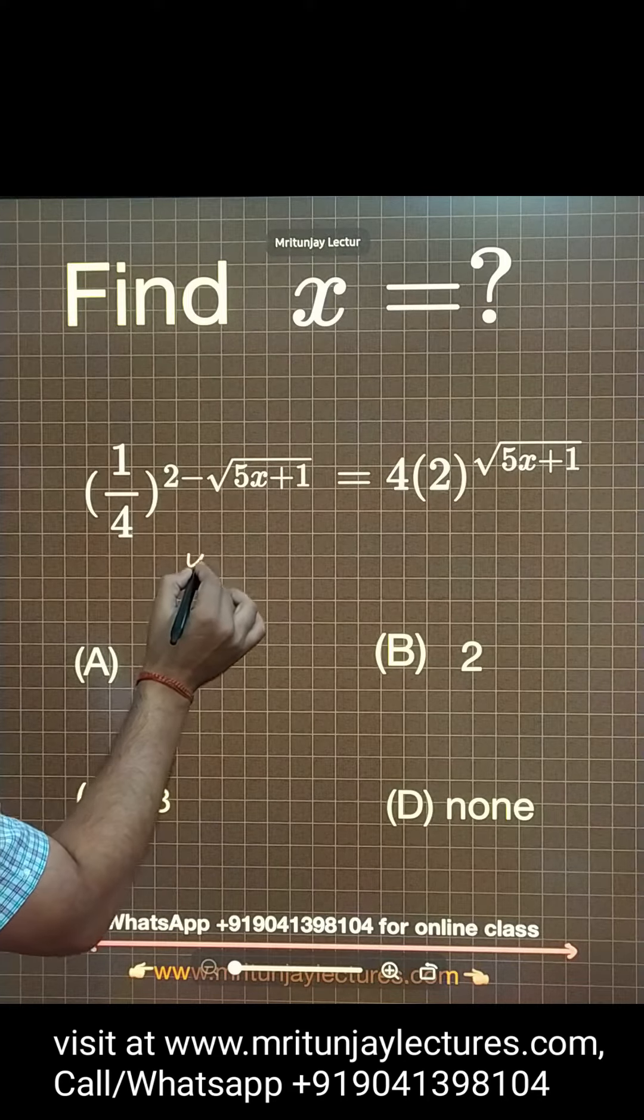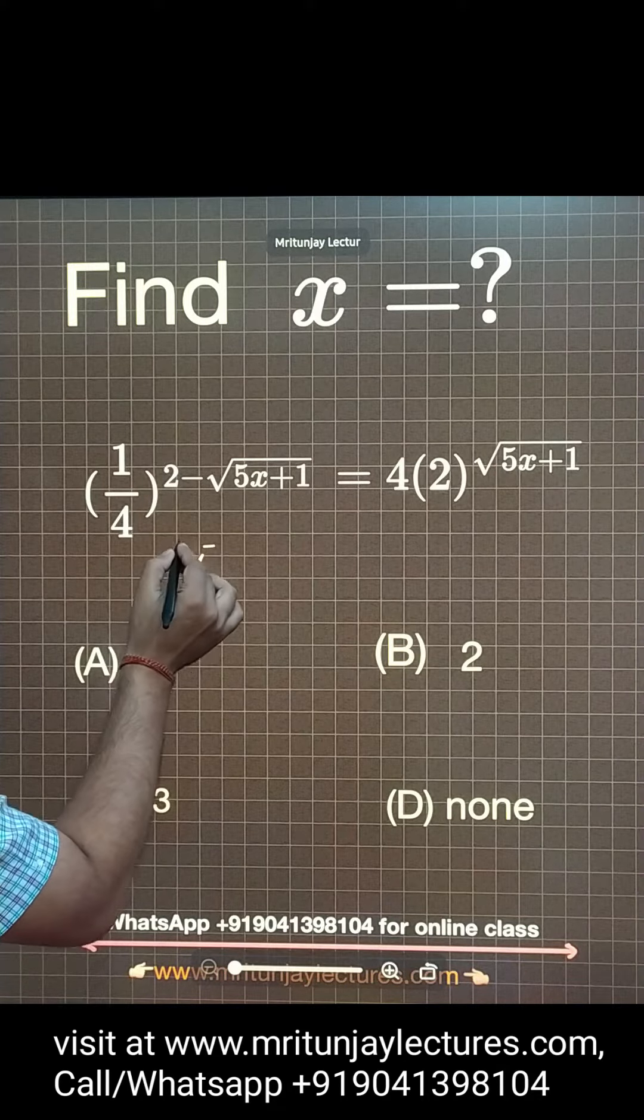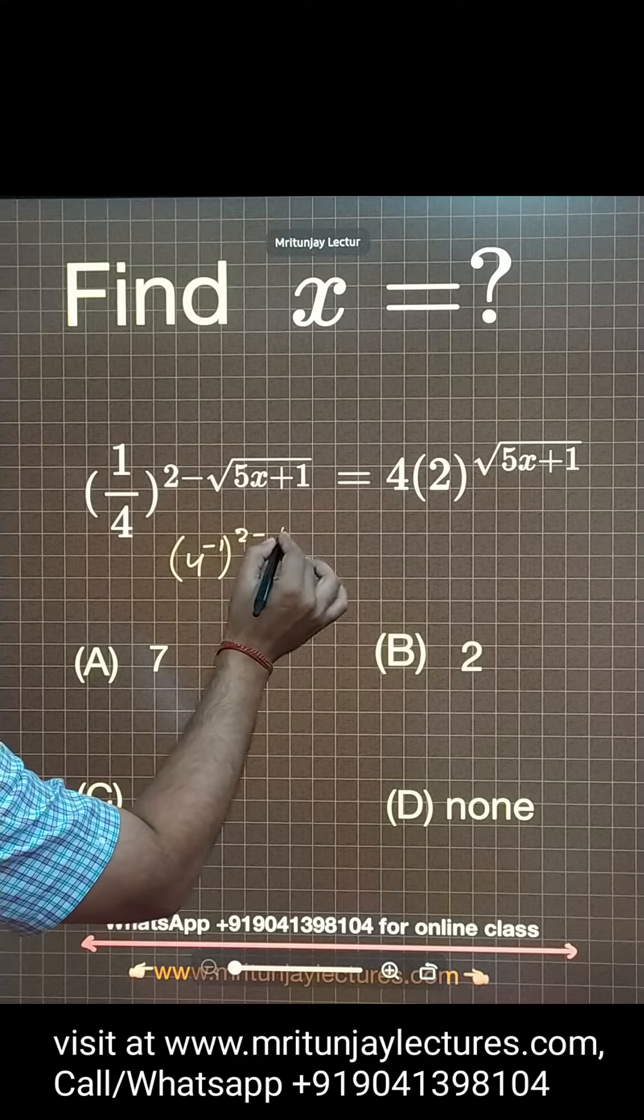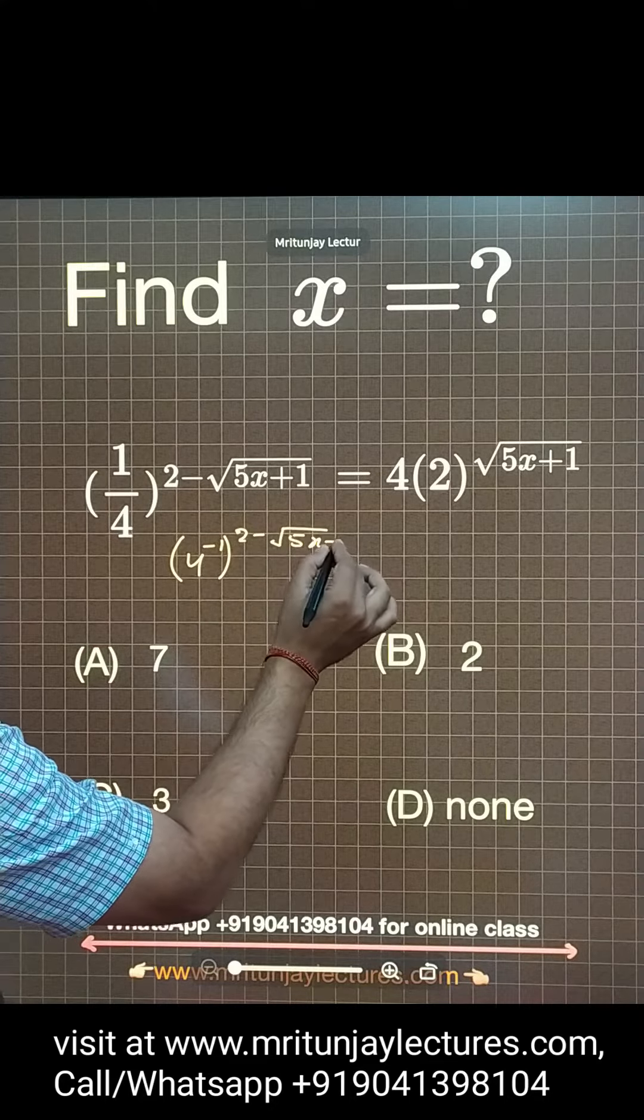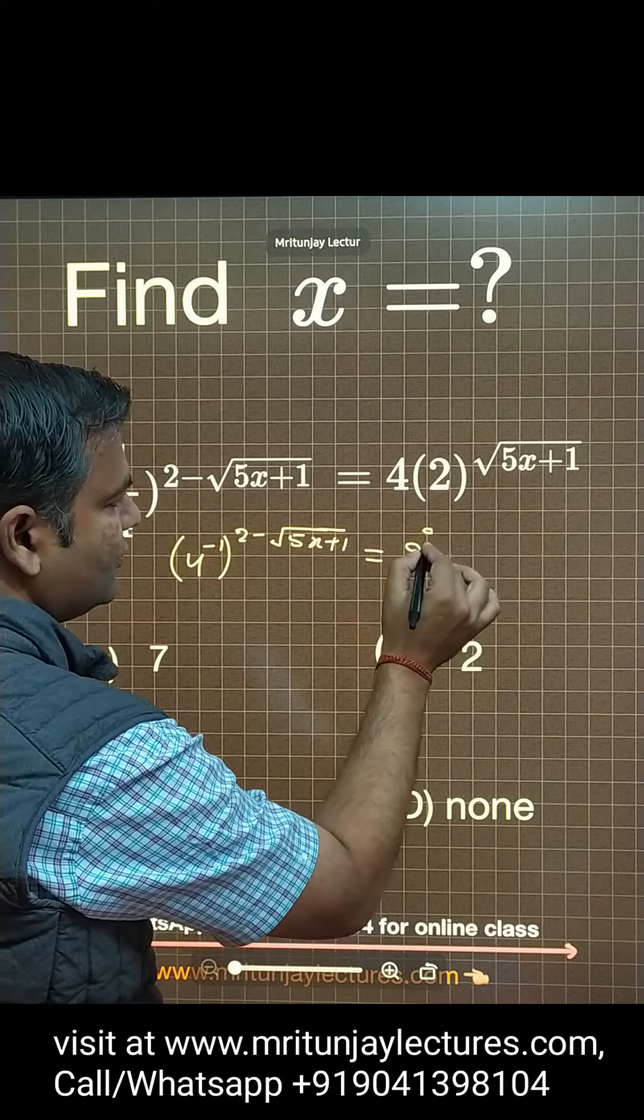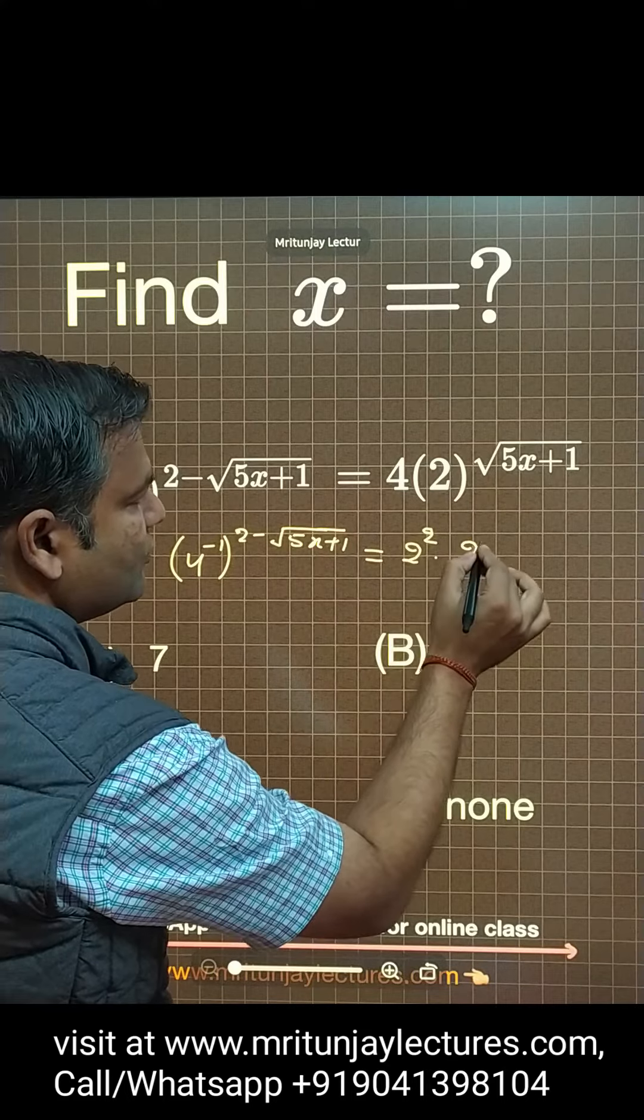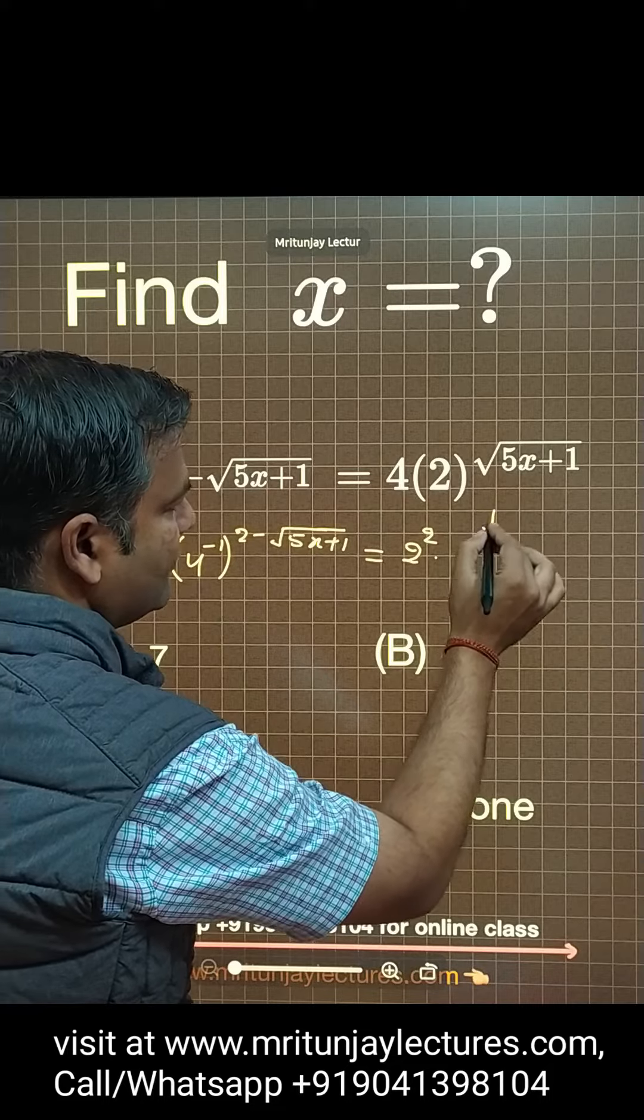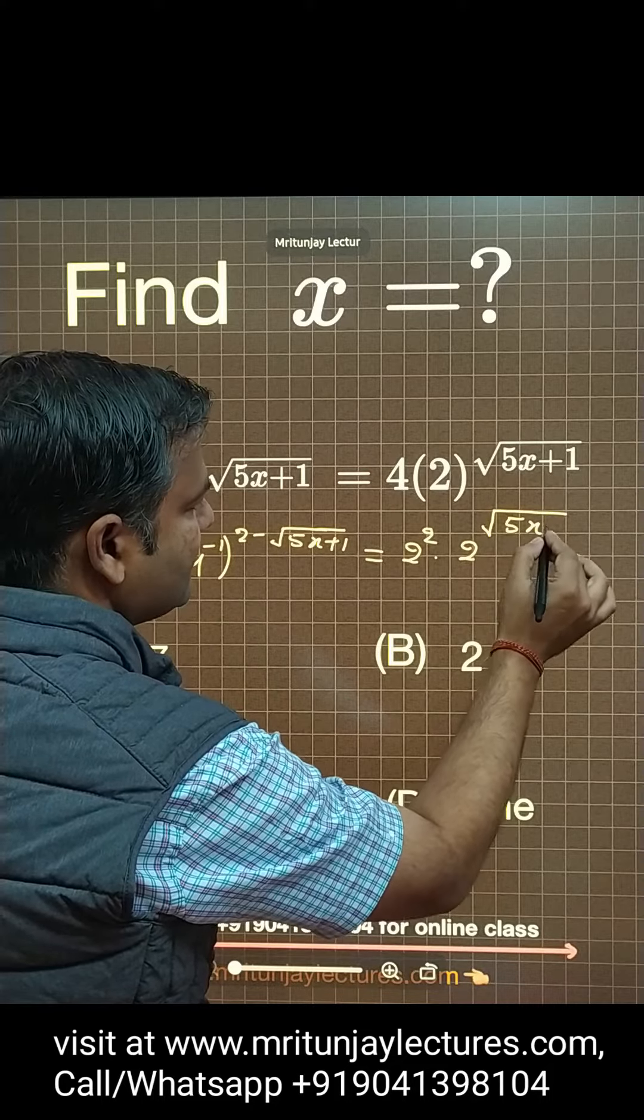That one is written as 4 to power minus 1, 2 minus root 5x plus 1. This is equal to 4, which is also written as 2 square, and that is 2 to the whole power 2 whole power root 5x plus 1.